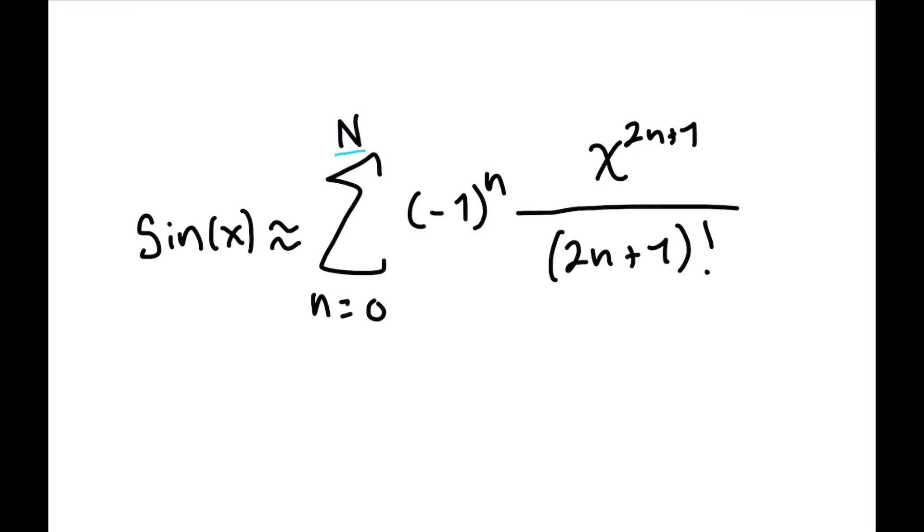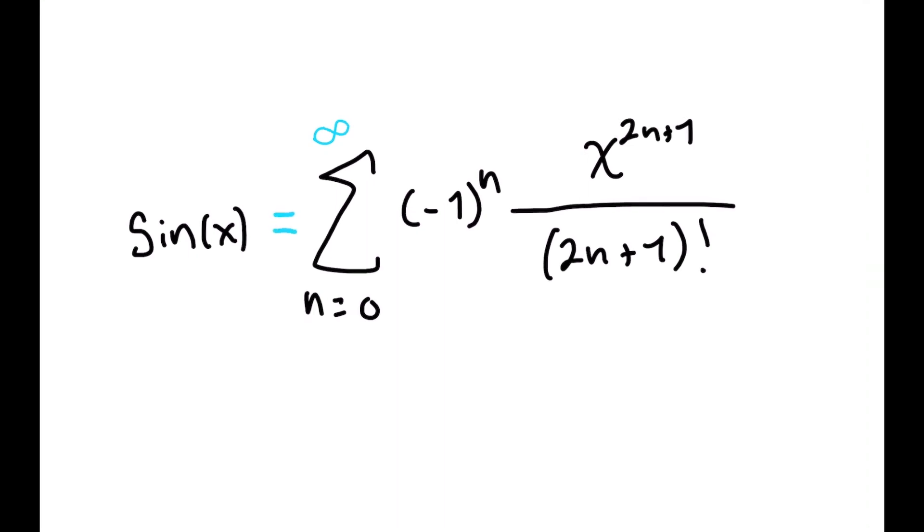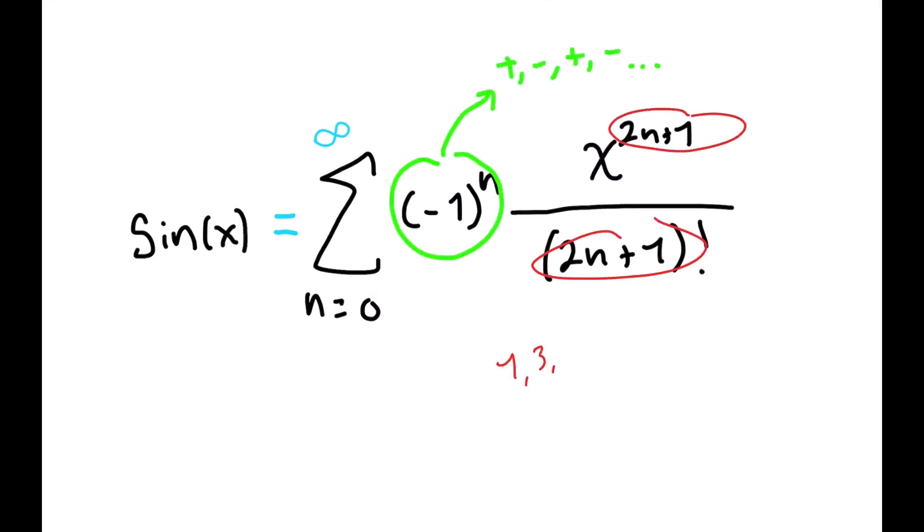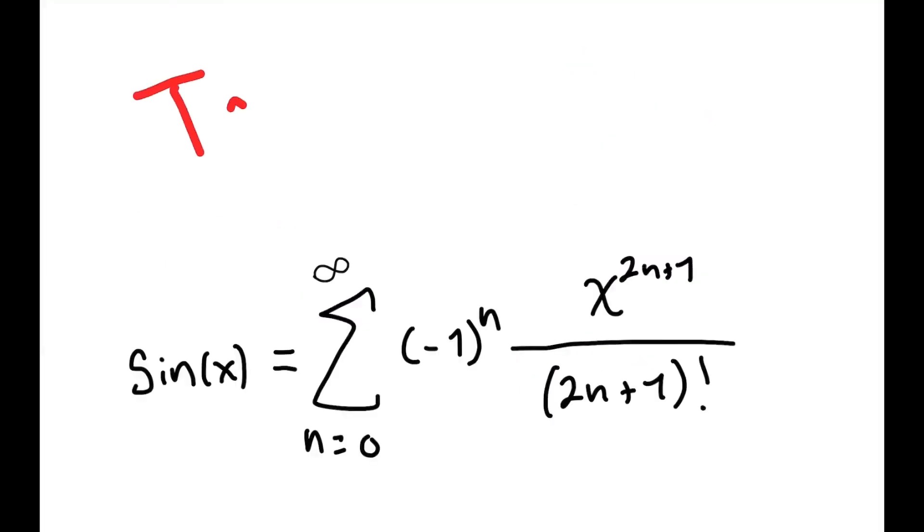The big n is essentially just the number of derivatives that you're setting equal. When big n goes to infinity, we're setting all the derivatives of our approximator equal to derivatives of sine of x, and the approximator will match sine perfectly. The negative 1 to the power of n term basically makes the signs alternate, and 2n plus 1 cycles through the odd numbers. This kind of series, which describes functions that approximate other functions, is known as a Taylor series.